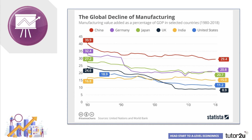Have a look at this chart. Going back to the 1980s, manufacturing and heavy industry made up more than a quarter of GDP for many countries. That figure is now in decline. Even in countries like China, it's gone down from 40% to 30%. In the UK, it's gone down from 25% to 9%. So a fall in the share of manufacturing can lead to structural unemployment.